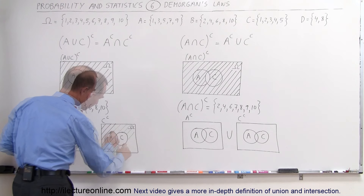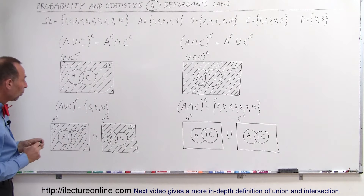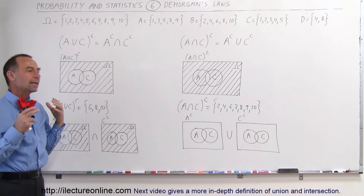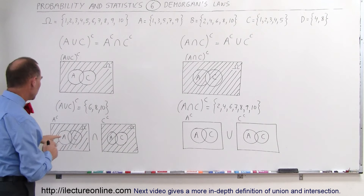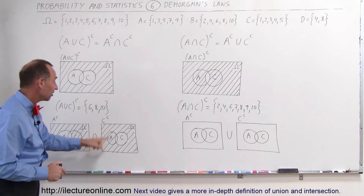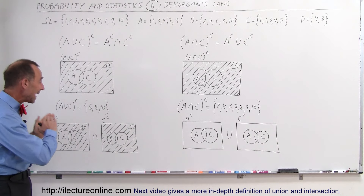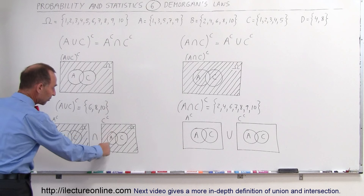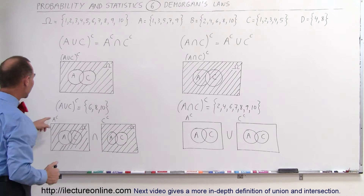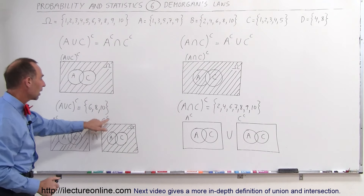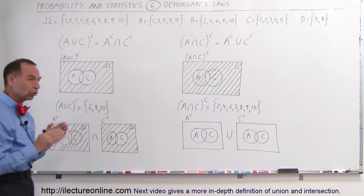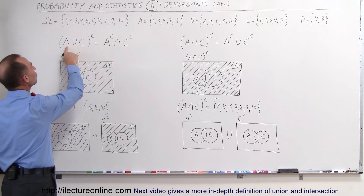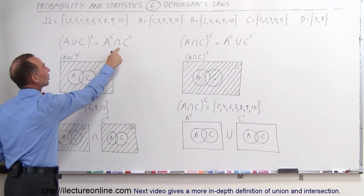Now we're going to draw the complement of C — that's everything outside of C. Now, what is the intersection of the complement of A and the complement of C? The intersection would be everything that belongs to both. Everything outside of A is the complement of A; everything outside of C is the complement of C. But what is the complement of both A and C combined? You cannot include the portion of C, and you cannot include the portion of A. So everything that belongs to A and C has to remain open. So if you take the complement of A and take the intersection with the complement of C, by inspection we can see that the complement of the union of A and C is equal to the complement of A intersected with the complement of C.